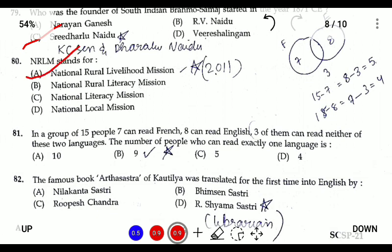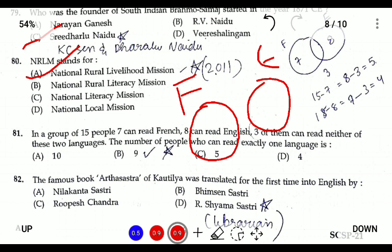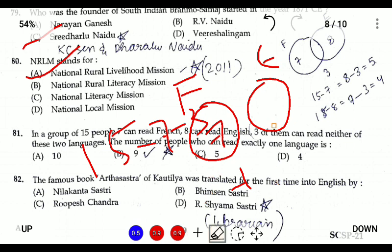Question eighty-one: in a group of fifteen, seven can read French, eight can read English, and three can read neither. Using a Venn diagram — French circle has seven and English has eight. Subtracting those who can read neither (three) from the total fifteen gives twelve who can read at least one language. Total of French plus English is fifteen, minus twelve gives three who can read both. French only: 7 − 3 = 4; English only: 8 − 3 = 5. So four plus five equals nine who can read only one language. The answer is nine.